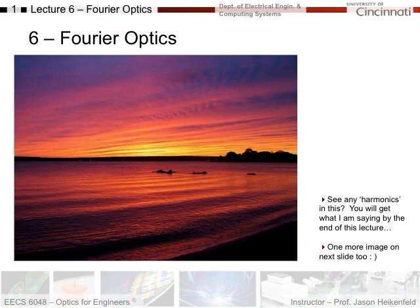Look at this image. When you think of the Fourier transform, you think of harmonics and frequencies that an object or something is broken up into. There are all sorts of harmonics you can see here, such as the waves in the background and the clouds. We'll talk about how you can use the Fourier transform to represent this image not as exact bits, but using compression in terms of its harmonics, and then how you can apply that to optics.